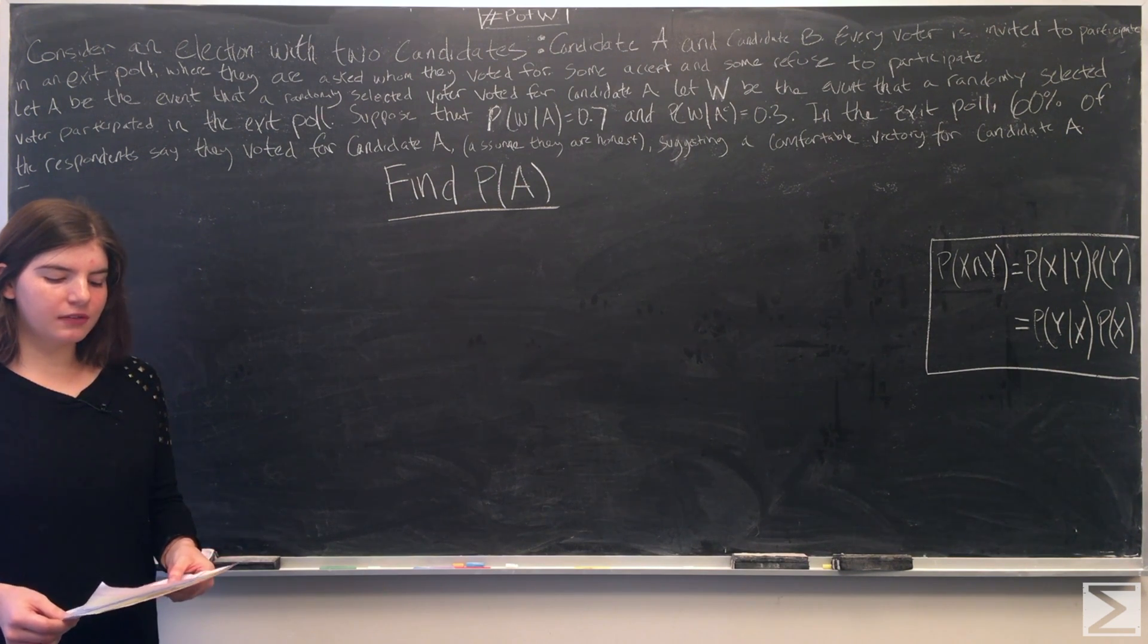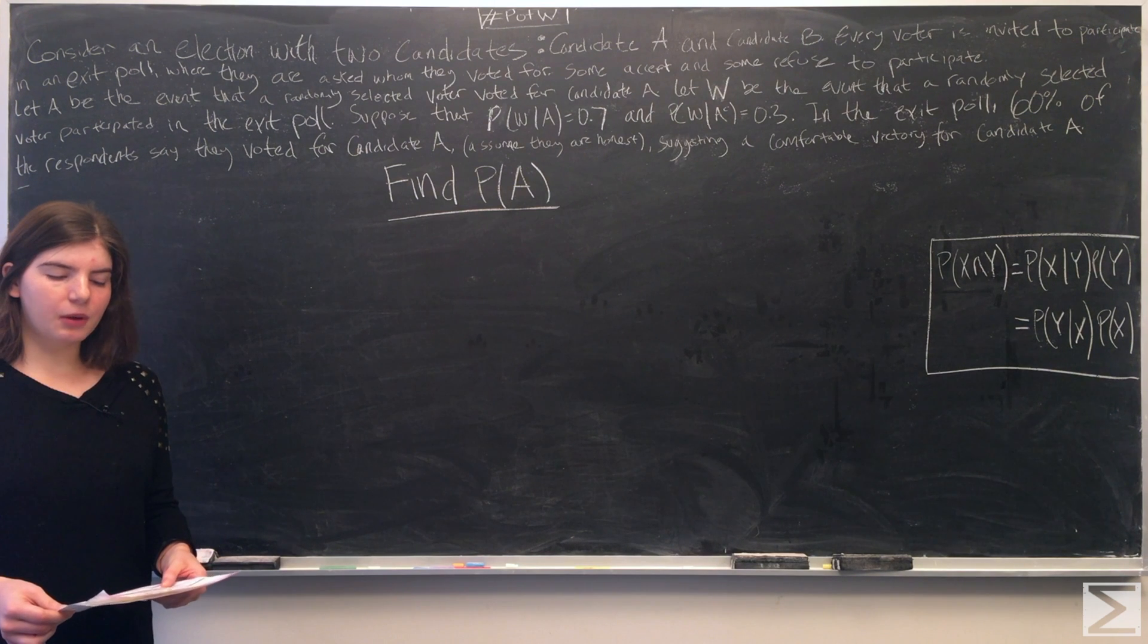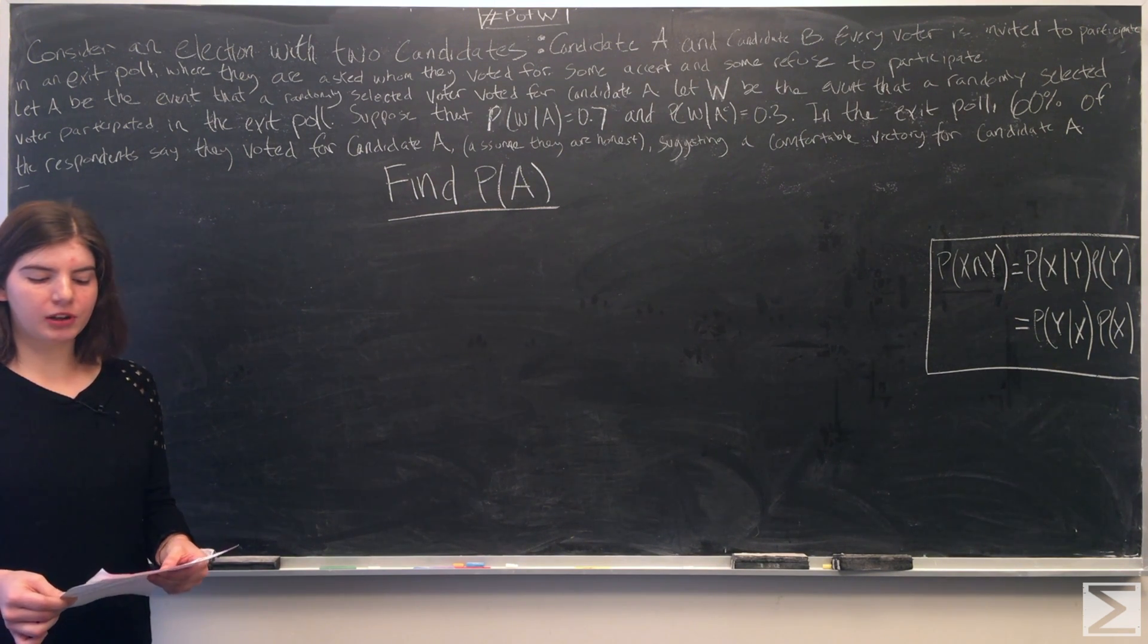Suppose that the probability of W given A is 0.7 and the probability of W given A complement is 0.3.